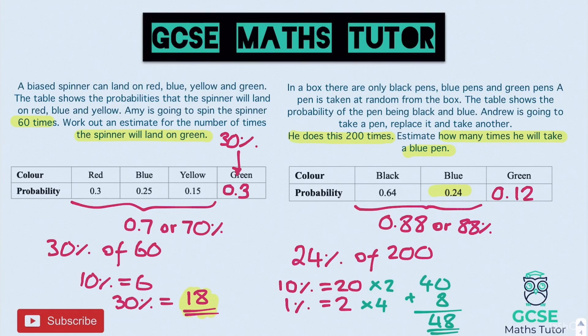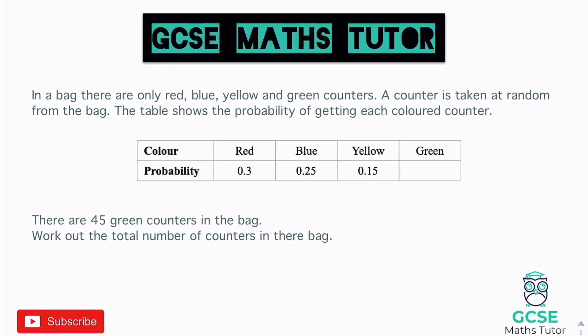That covers relative frequency from a table. Now let's look at something slightly different. In a bag there are red, blue, yellow and green counters. The table shows the probability of getting each colour, and we're missing green. The question tells us there are 45 green counters — work out the total number of counters.